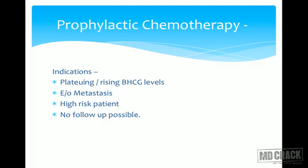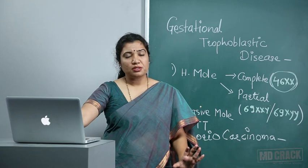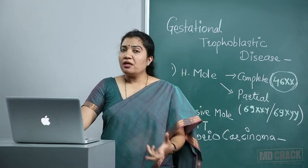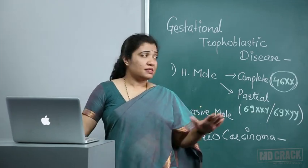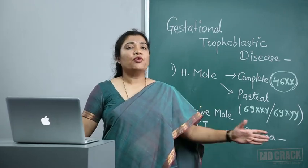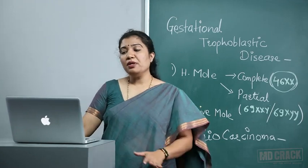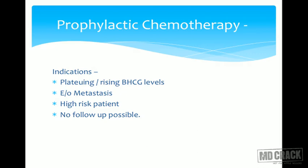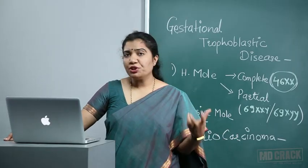GTD is equal to methotrexate — it is a very chemosensitive tumor and complete cure is possible. Methotrexate is the drug of choice. Prophylactic chemotherapy is indicated in high-risk patients, if serum beta-HCG levels plateau or rise after evacuation, if there is evidence of metastasis (e.g., lung metastasis), and if the patient is unlikely to comply with follow-up.